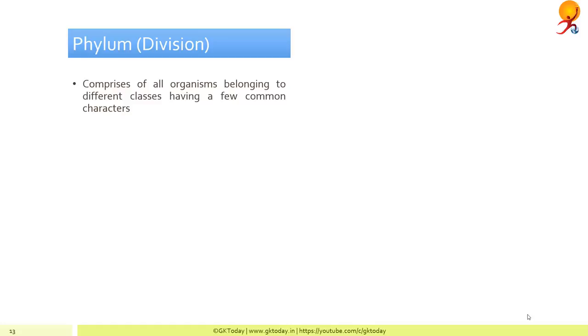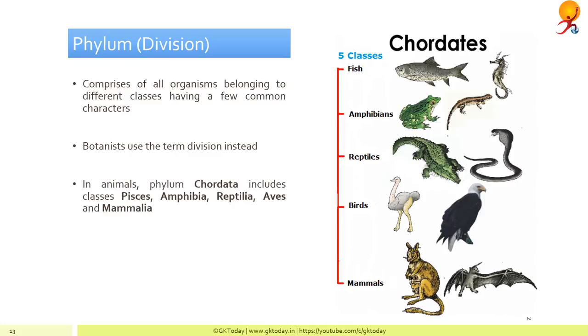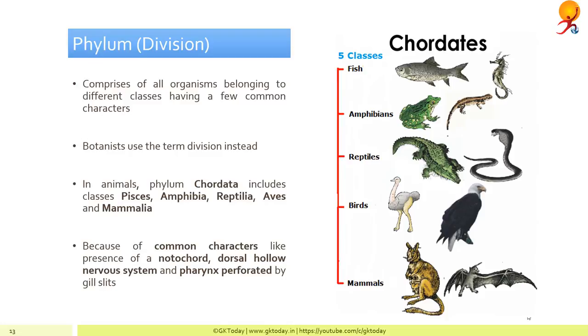Phylum in the case of animals, division in the case of plants, comprises organisms belonging to different classes — so classes together form a phylum. Classes with common characteristics together form one phylum. In animals, phylum Chordata includes Pisces, Amphibia, Reptilia, Aves, and Mammalia — that is fish, amphibians, reptiles, birds, and mammals — because of common characteristics such as the presence of a notochord, dorsal hollow nervous system, and a pharynx perforated by gill slits.